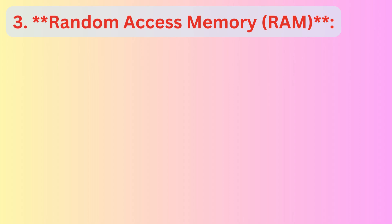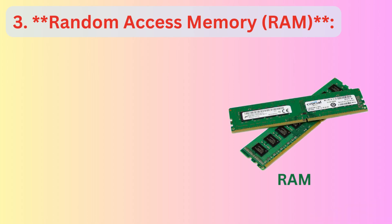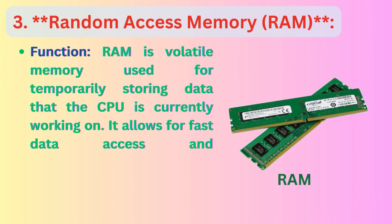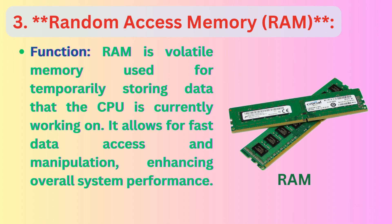3. Random Access Memory, RAM. Function: RAM is volatile memory used for temporarily storing data that the CPU is currently working on. It allows for fast data access and manipulation, enhancing overall system performance.